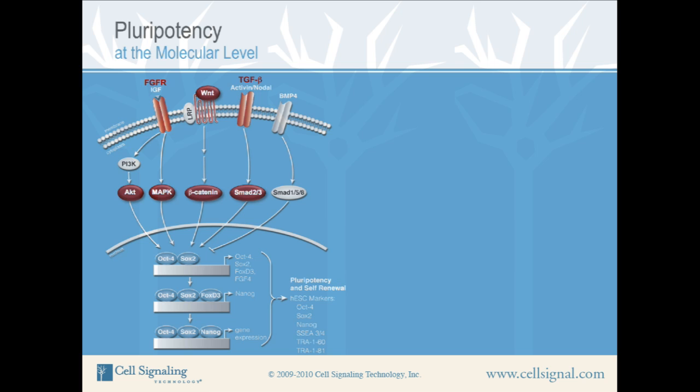The Wnt pathway also promotes pluripotency through activation of beta-catenin. Signaling through these pathways results in the expression and activation of three key transcription factors: OCT4, SOX2, and NANOG.